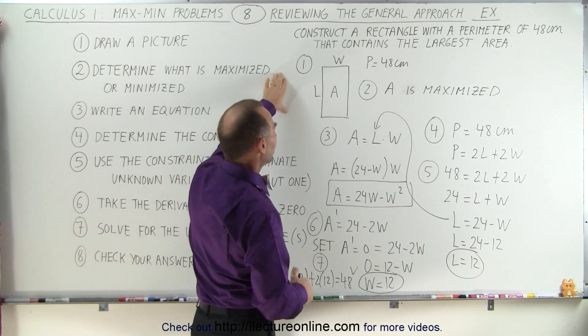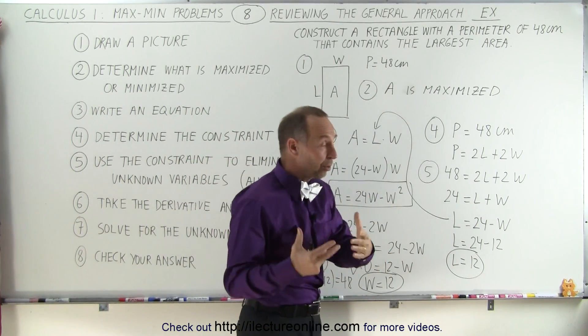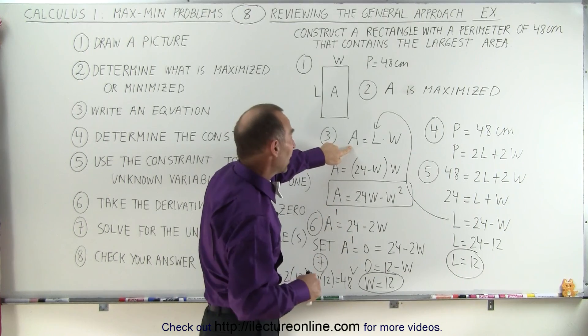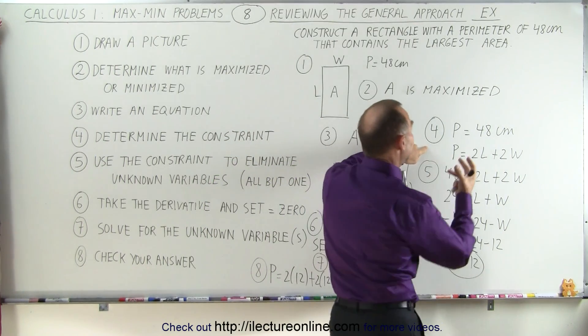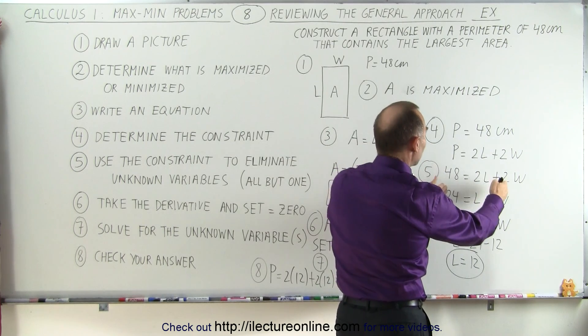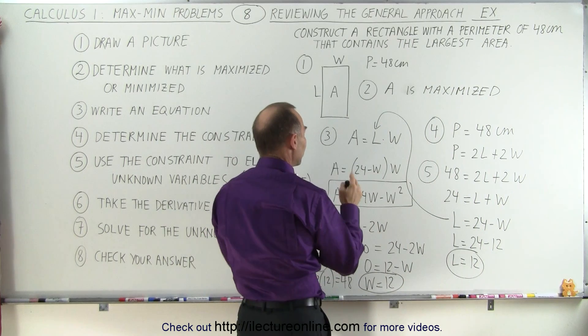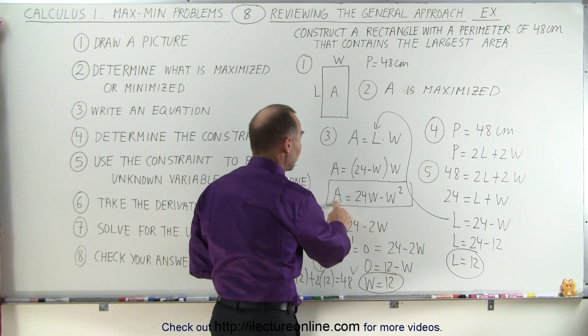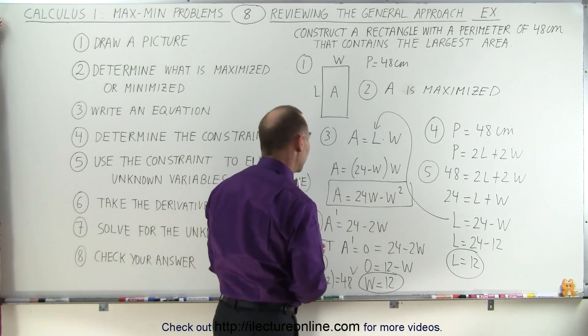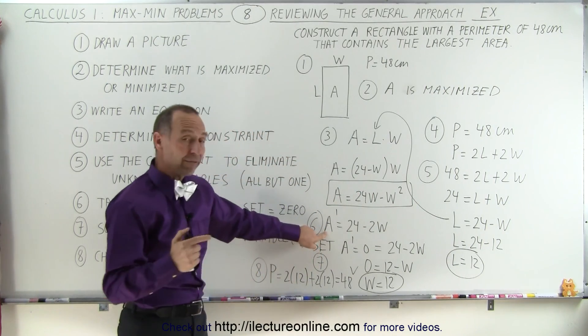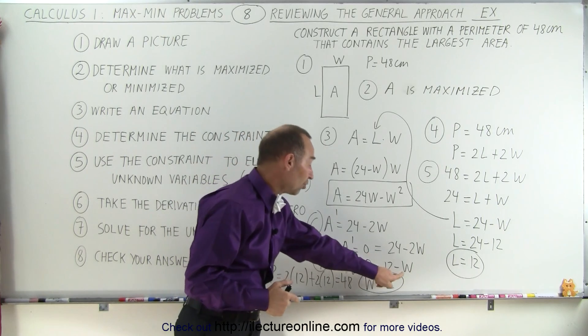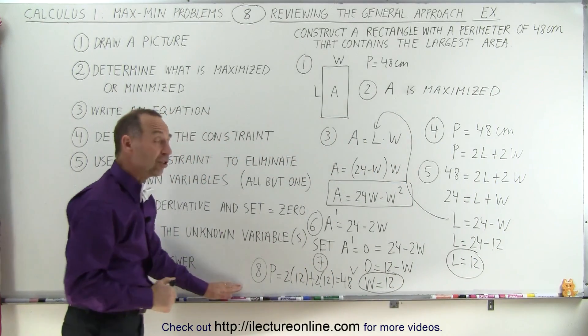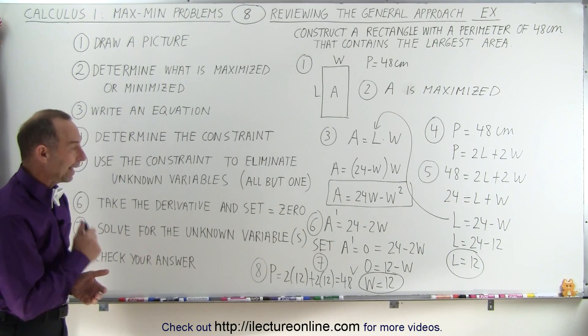Step one, we draw a picture. Step two, we determine what's being maximized. Once we determine that, we write an equation in terms of all the unknown variables for the variable that we're trying to maximize or minimize. Step four, we find a constraint. Step five, we use the constraint to eliminate one of the variables. Once we've eliminated one or sometimes more than one of the variables because we only end up with one variable, we now have a function that's a function of just one variable, and now we can take the derivative of that. Once we take the derivative, we set the derivative equal to zero, then we solve for the unknown variable, and then we use that information to solve for all the other unknown variables, and finally do a quick check to make sure the answers do make sense. And that's how it's done.